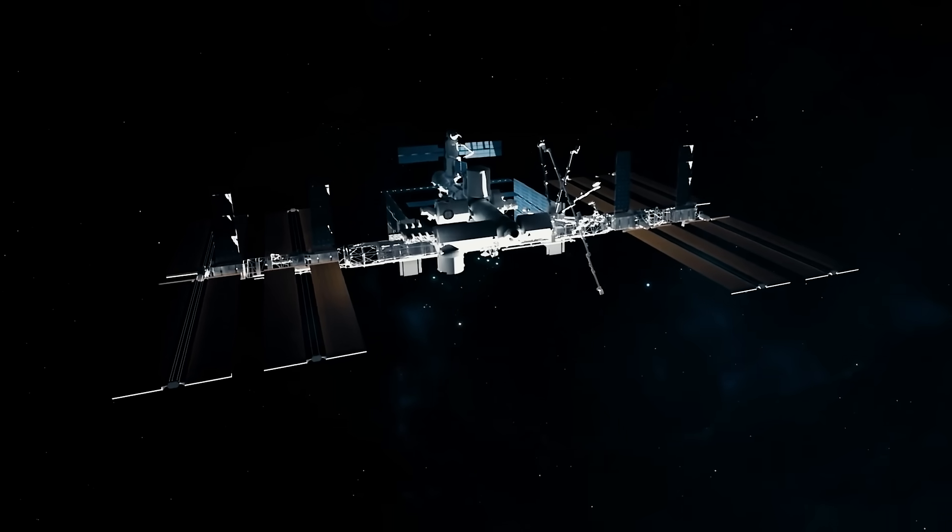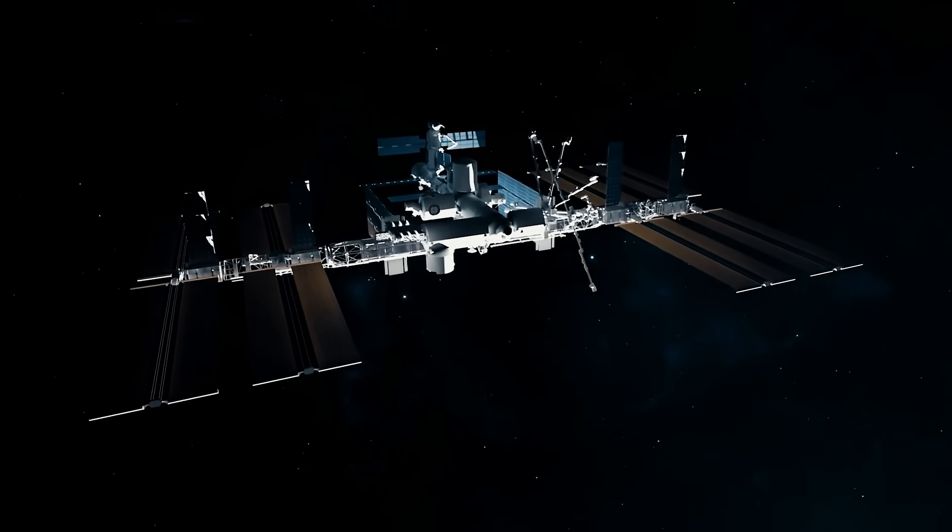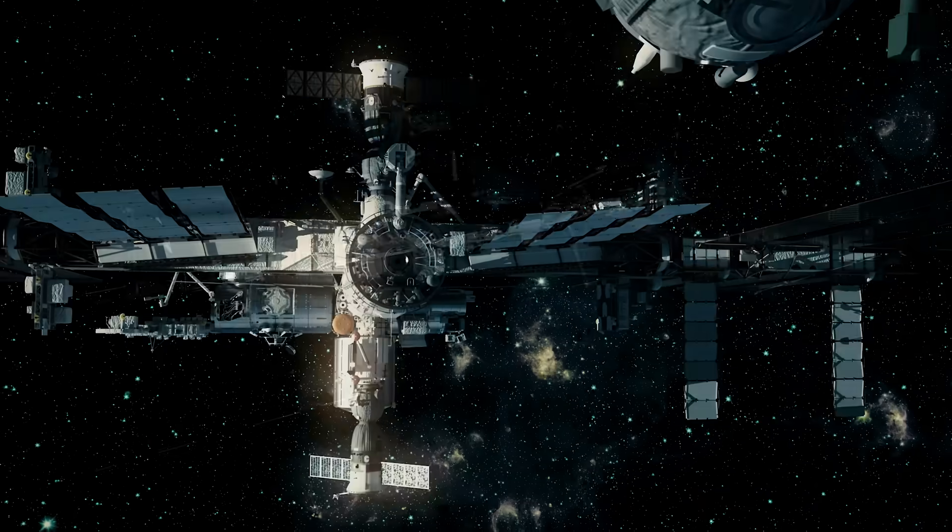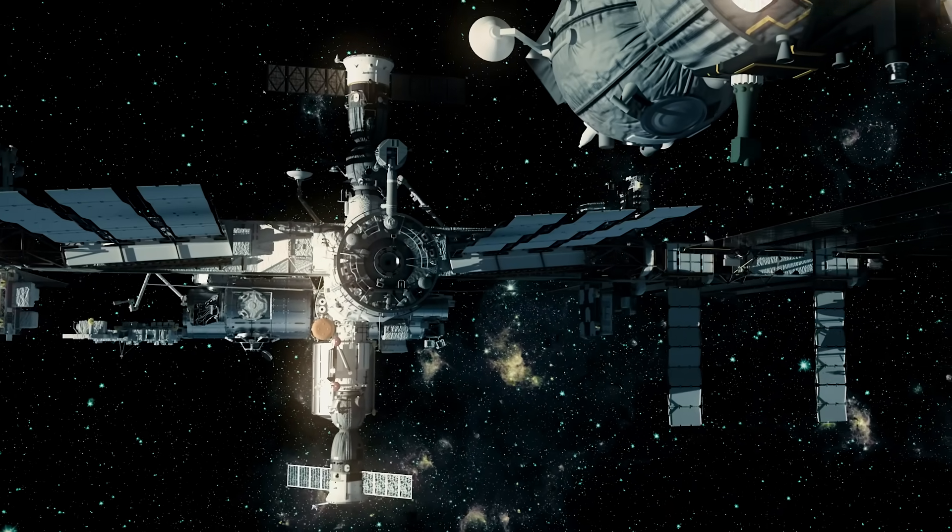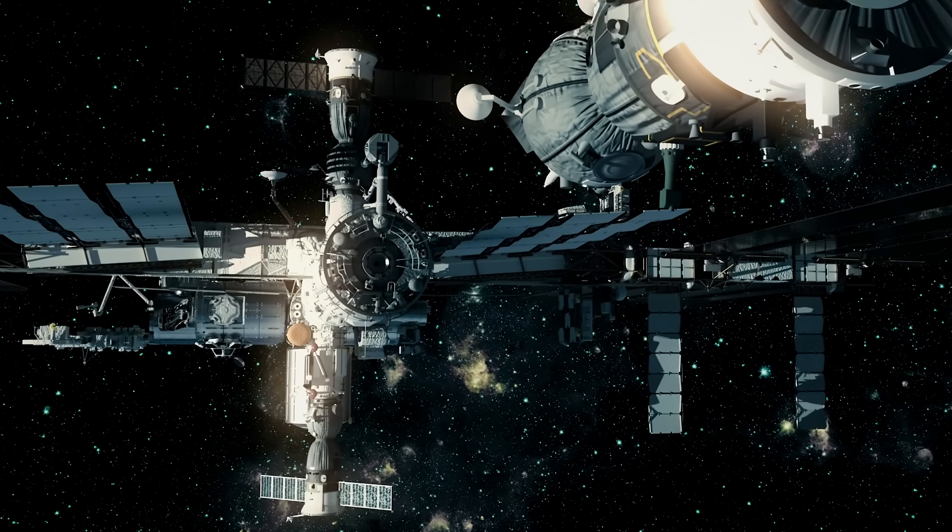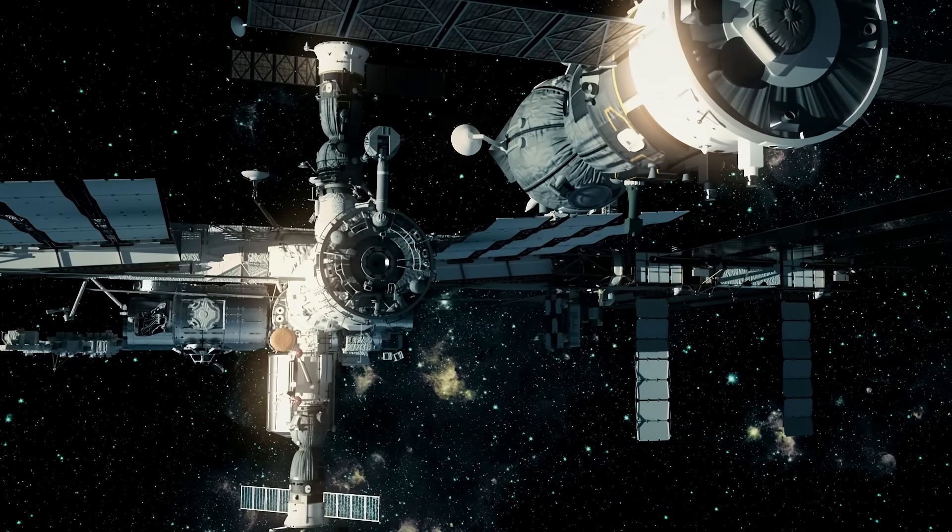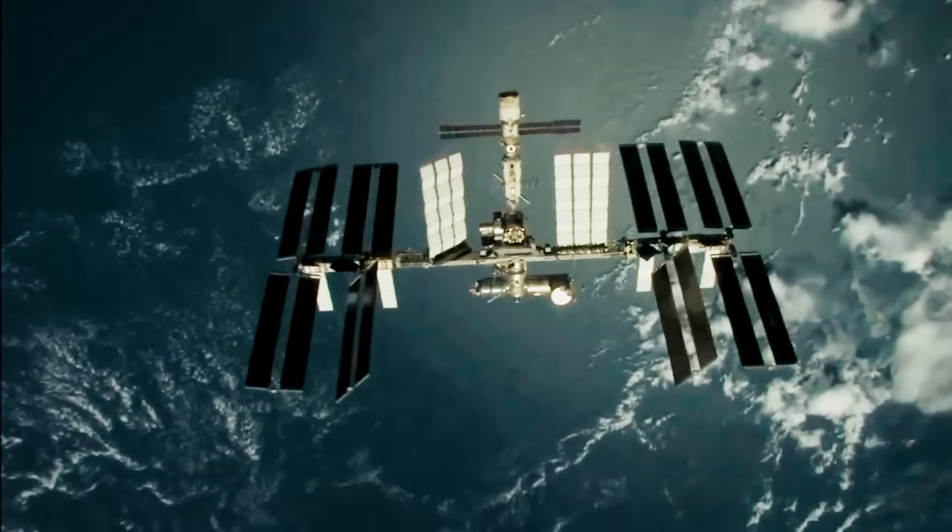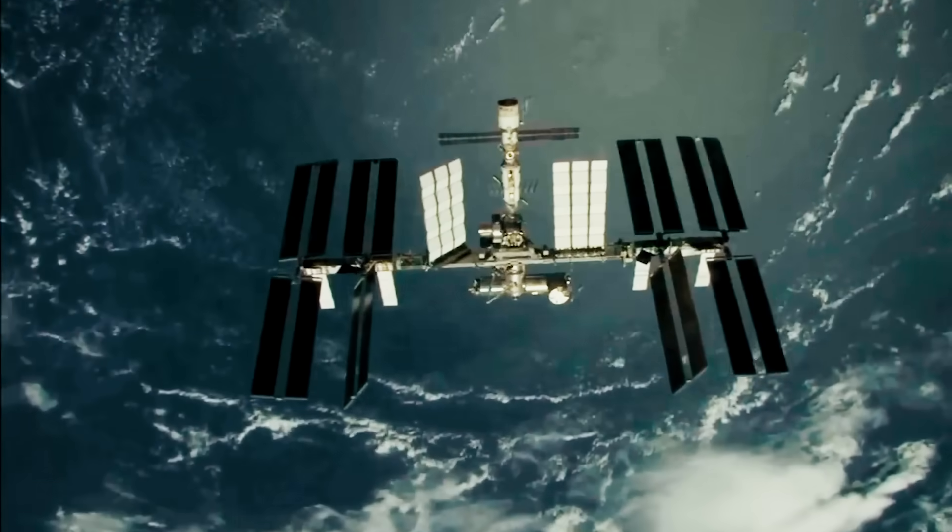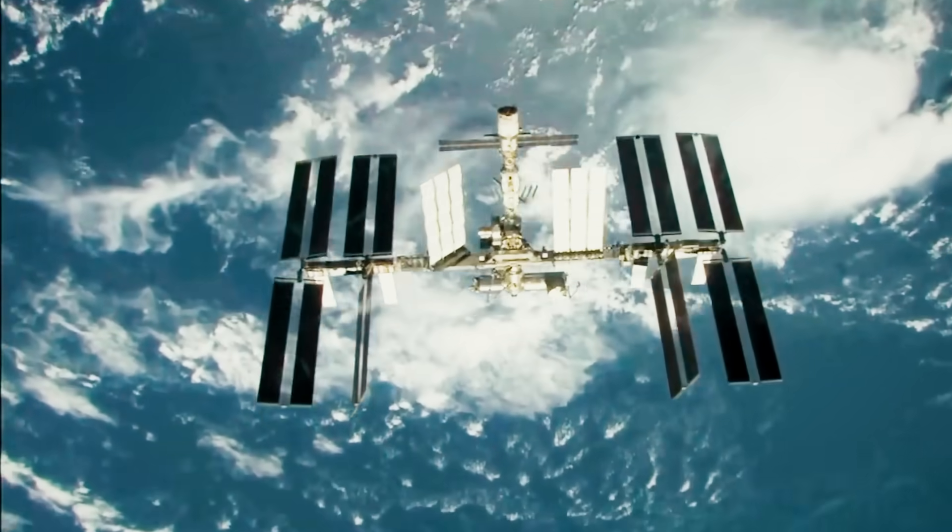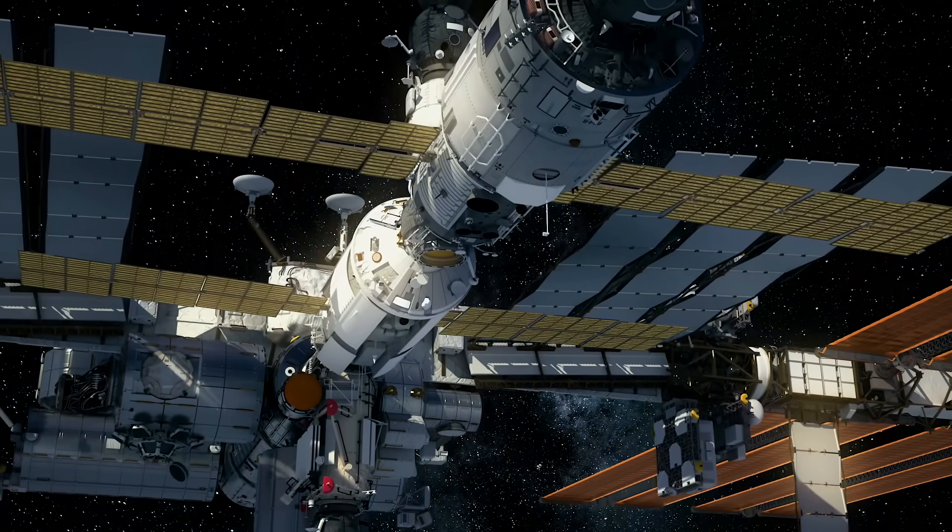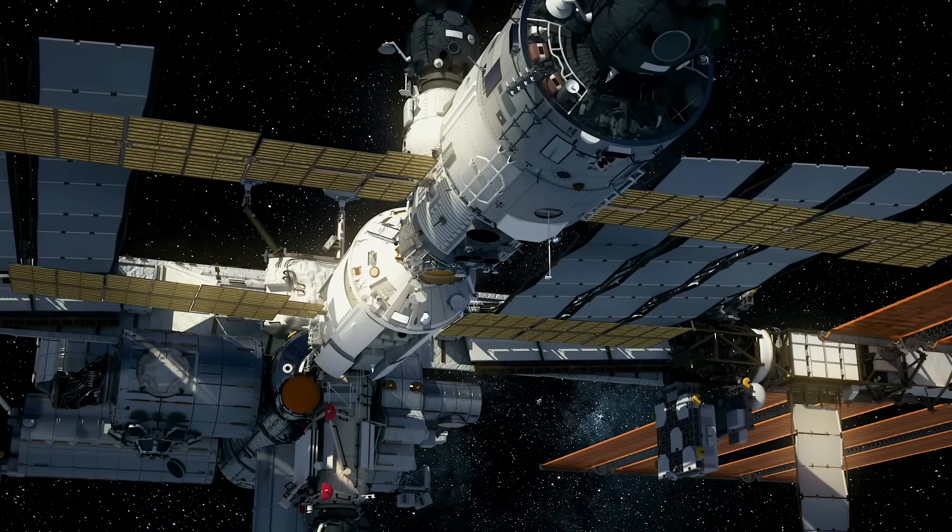This is the International Space Station. For over two decades, it has been our home in outer space. But it's a home unlike any other. The ISS is the size of a football field. It orbits the earth at over 23 times the speed of sound, and with a construction cost of around 160 billion US dollars, the space station is the most expensive structure ever built.